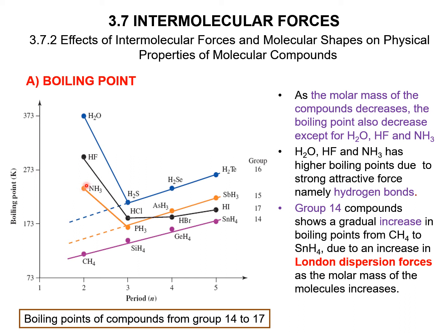H2O, HF, and ammonia have higher boiling points due to strong attractive forces — namely hydrogen bonds. As we discussed earlier, hydrogen bonds occur in molecules that contain oxygen, fluorine, and nitrogen.